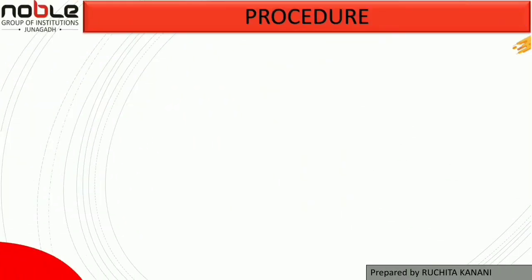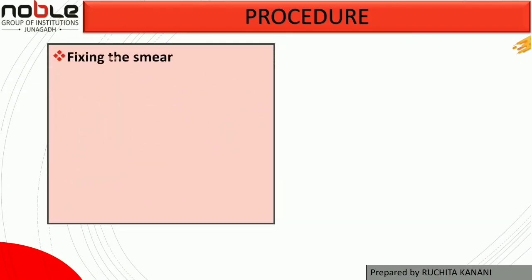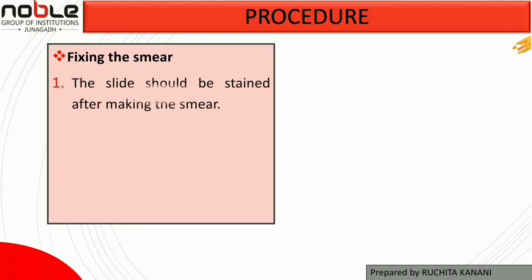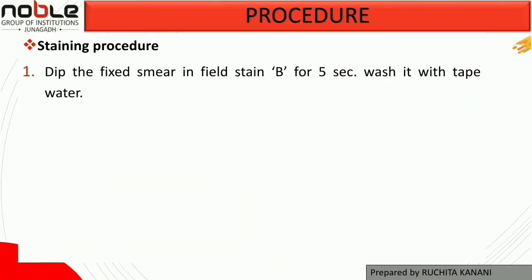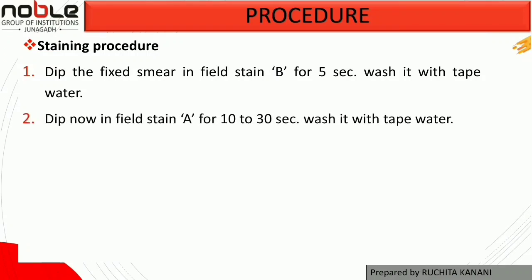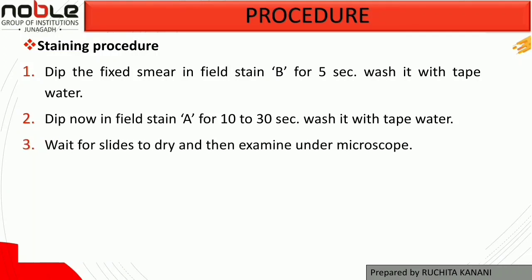The second step is how to fix the smear. Fix the blood film in absolute methanol or ethanol for 2 to 3 minutes, then remove and allow to dry. The third step is the staining procedure: dip the fixed smear in Fieldstain B for 5 seconds, wash with tap water, then dip in Fieldstain A for 10 to 30 seconds, wash with tap water, allow the slide to dry, and then examine under the microscope.